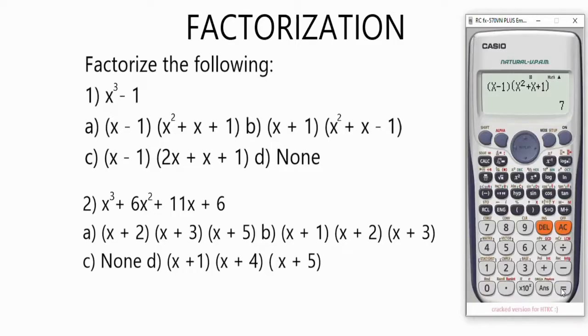We get 7, so correct. Our answer to this question is option a. So basically, factorizing the expression x³ - 1, we get (x - 1)(x² + x + 1). That's it for question 1.